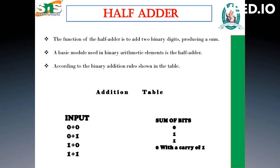If we give two inputs A and B, we receive one sum bit and one carry bit. For the addition of two bits: if A is 0 and B is 0, the sum bit is 0 and the carry bit is 0. If A is 0 and B is 1, the sum is 1 and the carry is 0. If A is 1 and B is 0, the sum is 1 and the carry is 0.